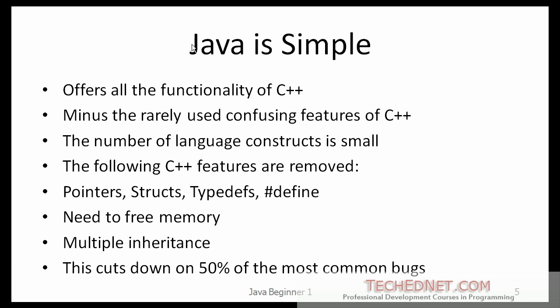The first one: Java is simple. I agree with that. Java is definitely a simple programming language — it is easy to get started with. It offers all the functionality of C++ minus the rarely used, confusing features of C++. The number of language constructs is small compared to most other programming languages. They decided to remove some features of C++ like pointers, structs, type-defs, and defines. Java doesn't have pointers, not the way they are implemented in C++ at least.